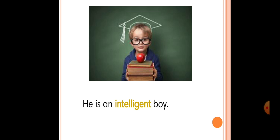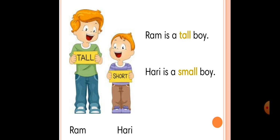Here is an example for you: he is an intelligent boy. The highlighted word 'intelligent' tells about the additional quality of that boy. He is a boy, we all know that, but how he is, we don't know. So 'intelligent' is an adjective here. Now, two boys are there — Ram and Harry. Ram is a tall boy, Harry is a small boy. So 'tall' and 'small' refer to size and are describing words.